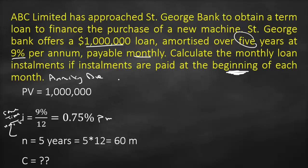What's the formula of annuity due? The present value equals C multiplied by 1 minus (1 plus i) all to the power negative n, divided by i, but I need to multiply this by 1 plus i. So this is our formula.